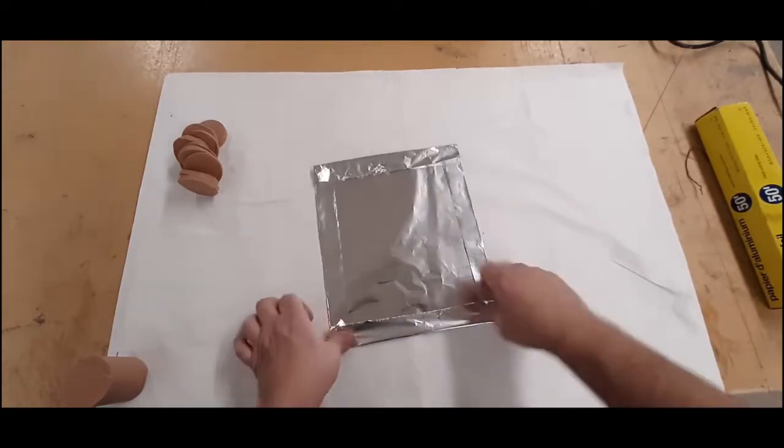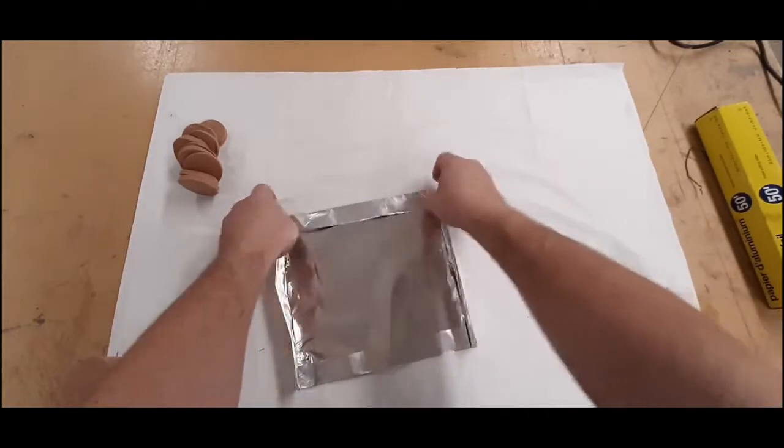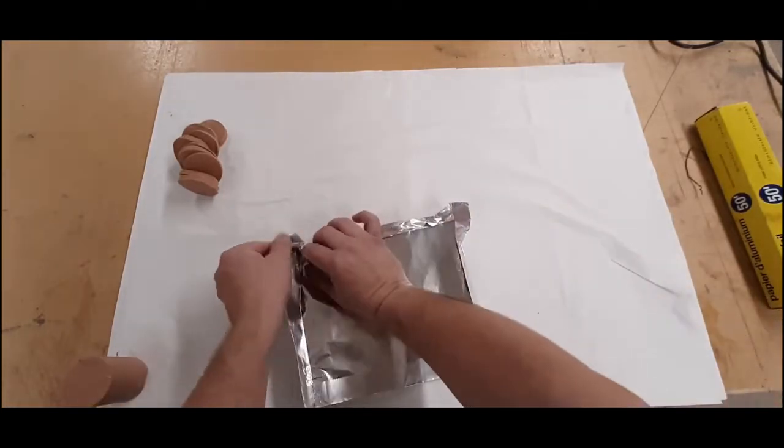Take another piece of foil and make a tray by folding up the sides a few times. This will give your clay somewhere to sit in the oven.